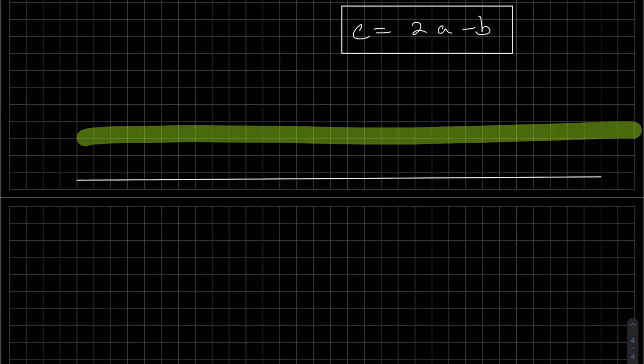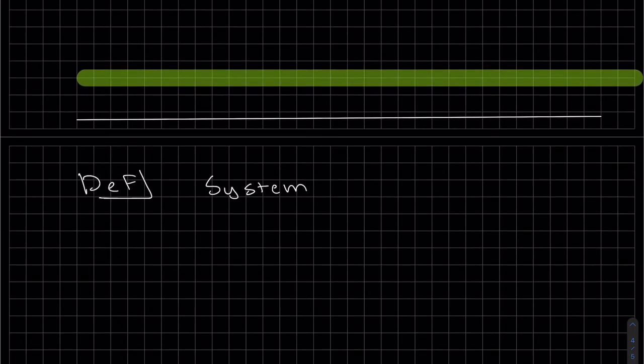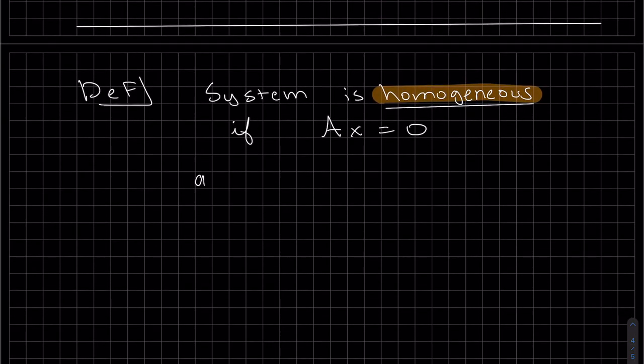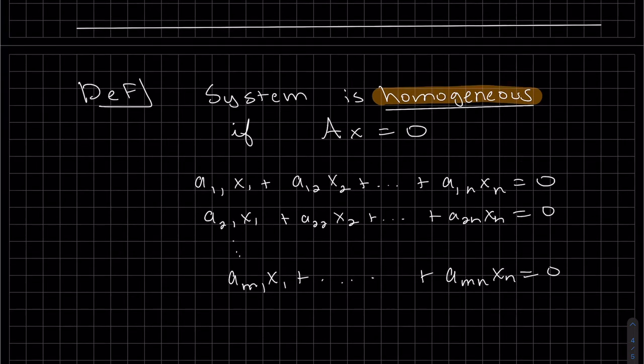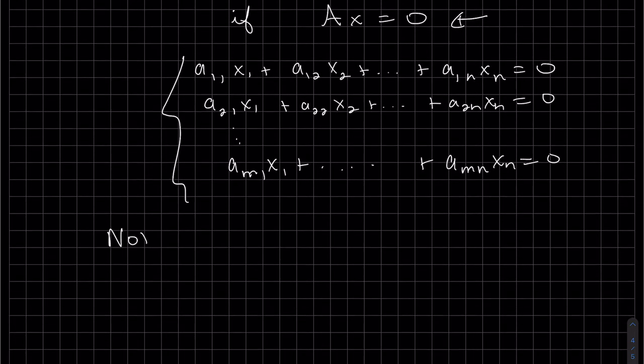Let's do some definitions here. If we have a system that's equal to zero, then the system is homogeneous. So just to write out the system of equations, here's our system with the a and the x multiplied out. But this is our shorthand notation. Basically it's homogeneous if they're all equal to zero. You have the vector of zeros right there. So if we have a homogeneous system, just to note, every homogeneous solution is consistent.